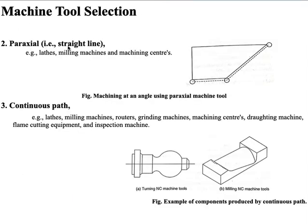Para-axial machine tools include lathes, milling machines, and machining centers. In para-axial machine tools, the cutting process occurs while the machine slides are moving and the movement path must follow a controlled route. The MCU must ensure that transient behavior in slide displacement does not result in slide hunting or oscillating about its desired position. If surfaces are to be machined at an angle to the axis, the MCU must be capable of displacing the slide simultaneously at suitable feed rates to produce a cutter path at the desired angle.